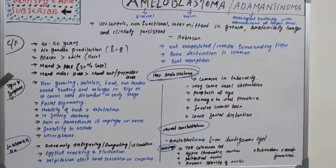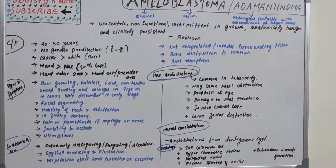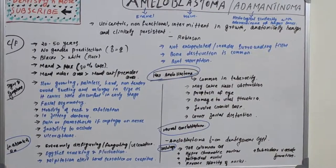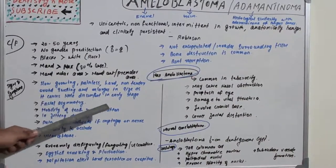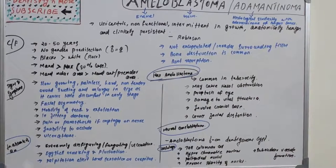Signs and symptoms: it is a slow-growing, painless, hard, non-tender ovoid swelling. In the early stage it is largely asymptomatic. As it grows it causes facial asymmetry, mobility of teeth and exfoliation, and ill-fitting dentures due to the enlarged size of the maxilla or mandible.